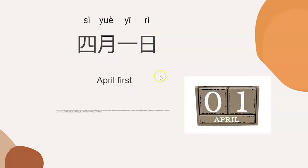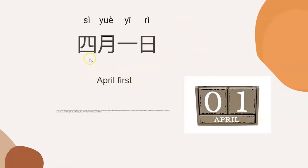And when is April Fools' Day? It's April 1st. If you haven't watched my video about months and days, please do, because you will get a clear idea of how to say the calendar. So let's say April 1st: 四月一日 (sì yuè yī rì). 四月一日.